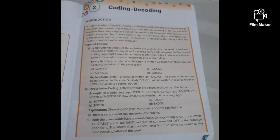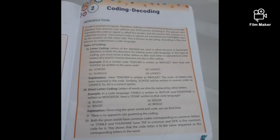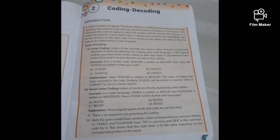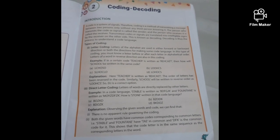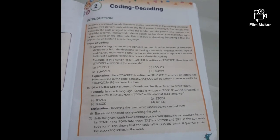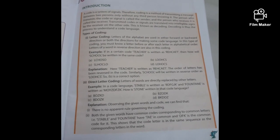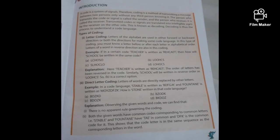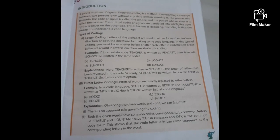Good morning children, this is your know your aptitude and reasoning class. In the previous class we had learned about coding and its types. So let's recall that and start today's class. A code is a system of signals. The person who transmits the code or signal is called the sender, and the person who receives it is called the receiver. Transmitted codes or signals are translated into intelligible signs by the receiver on the other side. This is known as decoding.